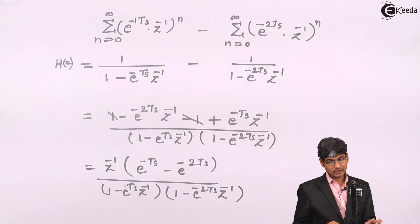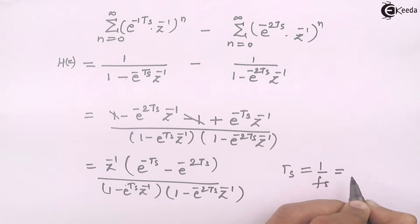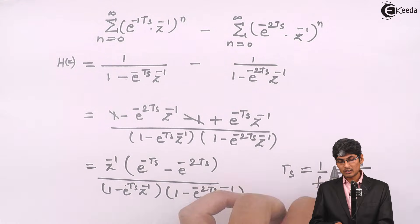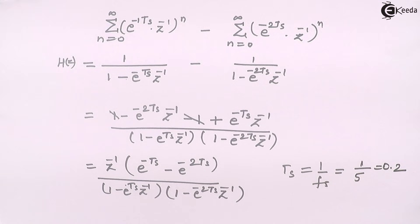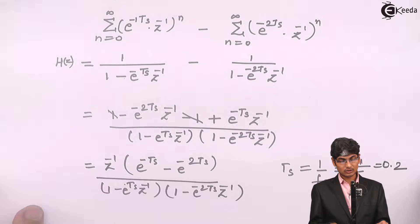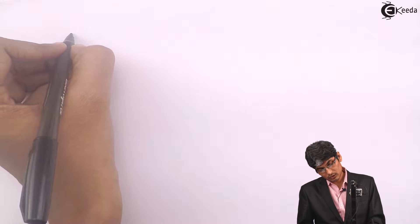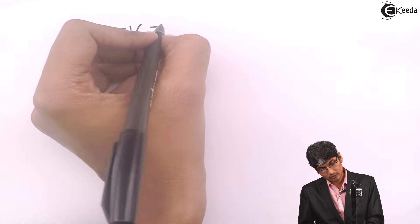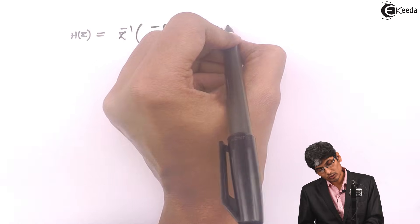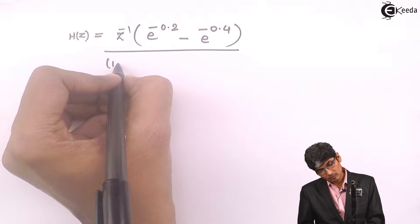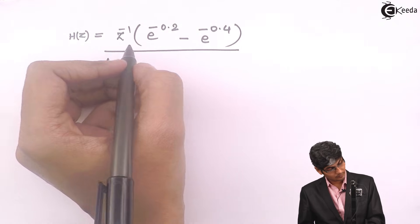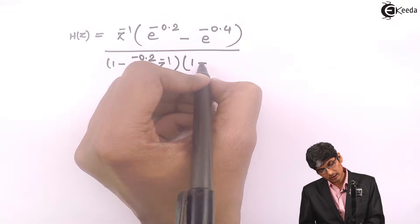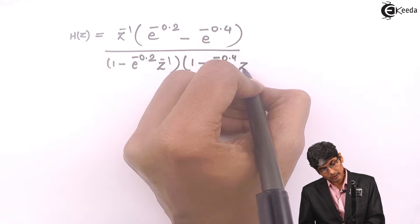Now let us substitute the value of Ts. Since the sampling frequency is 5 samples per second, Ts = 1/5 = 0.2. So H(Z) = Z^(-1)·(e^(-0.2) - e^(-0.4)) / [(1 - e^(-0.2)·Z^(-1))(1 - e^(-0.4)·Z^(-1))].